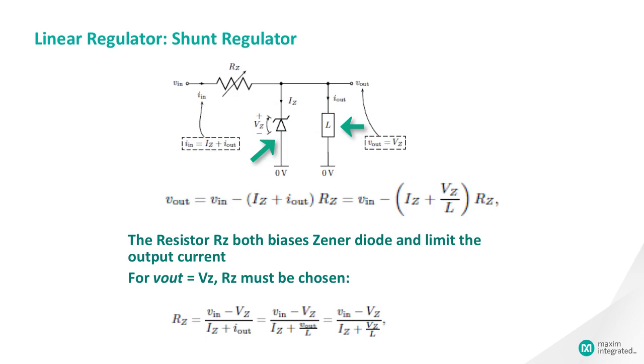The regulation of this circuit is also not very good because the Zener current, and hence the Zener voltage, will vary depending on VIN and inversely depending on the load current.